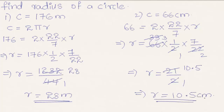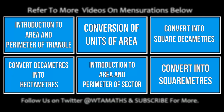To conclude: the circumference of a circle is given by the formula 2πr. Hope you understood the concept — do like and subscribe to vteachacademy.com. Thanks for watching, have a nice day.